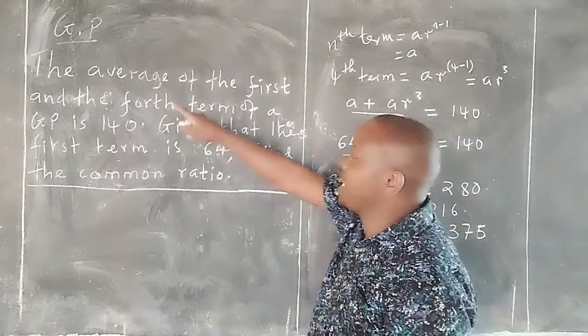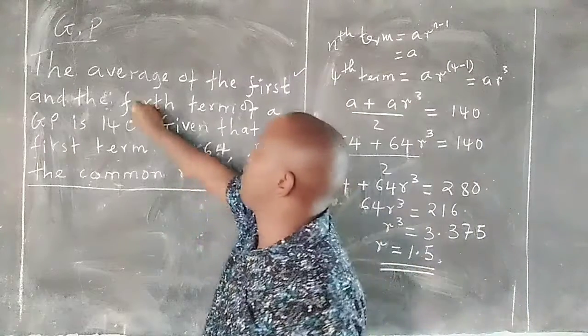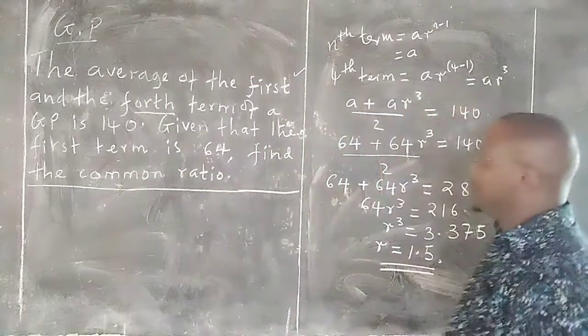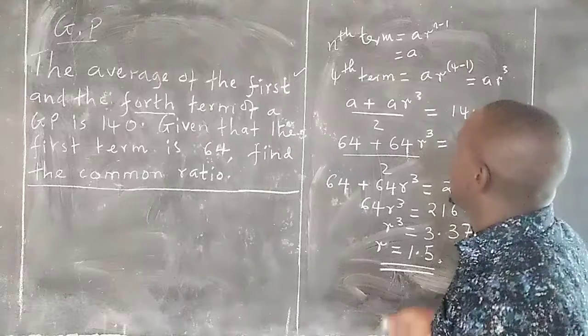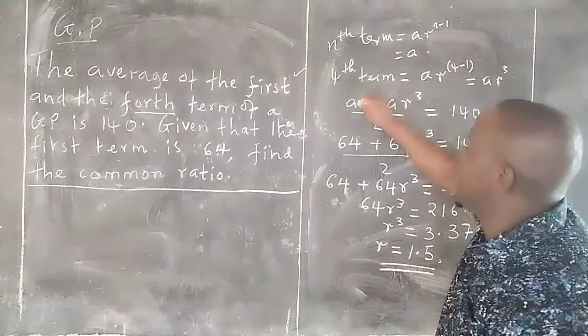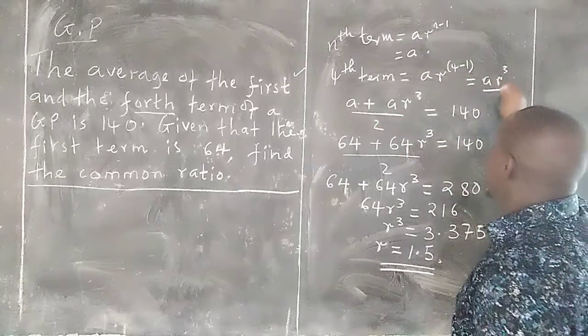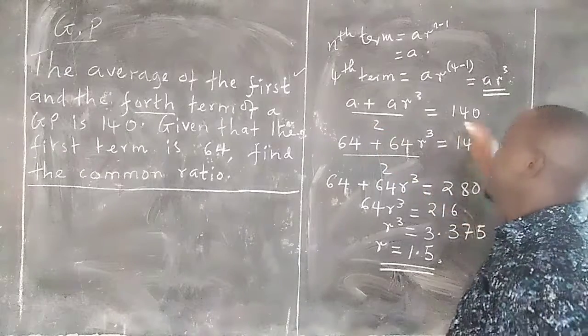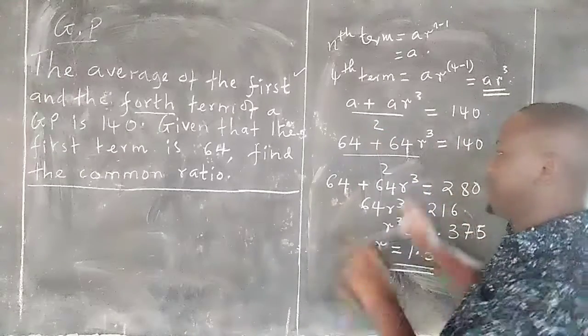When we are told that the average of the first and the fourth term, then our students should be aware that we are being told that when we take the first term which is a and we add the fourth term, then we divide by 2, we get 140.